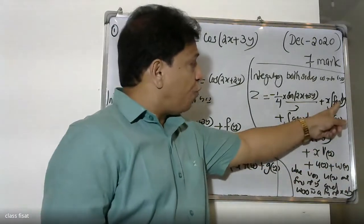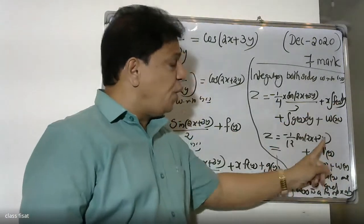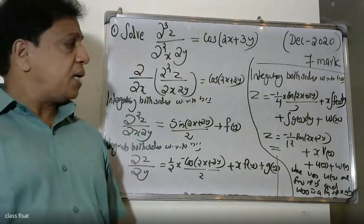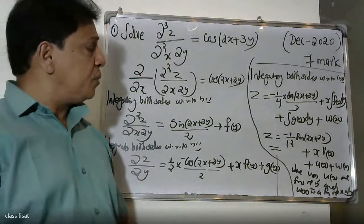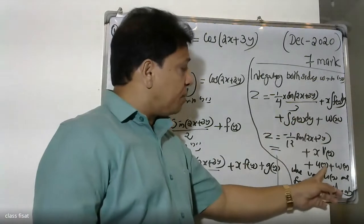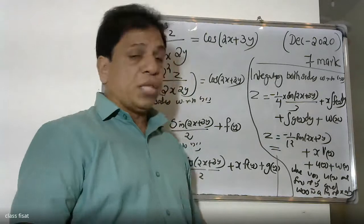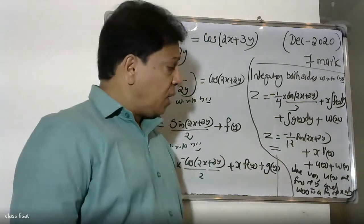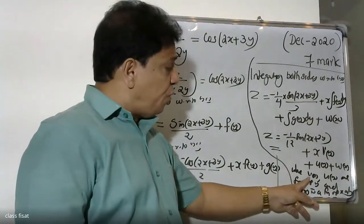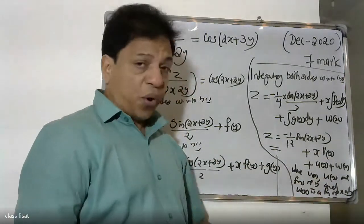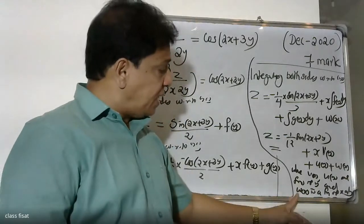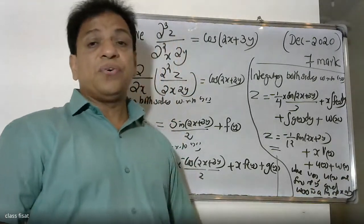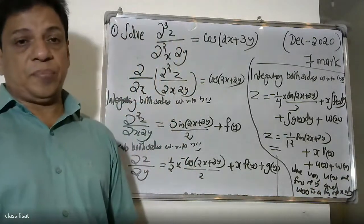Here, the integral of f(y) dy is denoted v(y), the integral of g(y) dy is denoted u(y), and w(x) is another arbitrary function. So v(y), u(y) are functions of y, and w(x) is a function of x only.